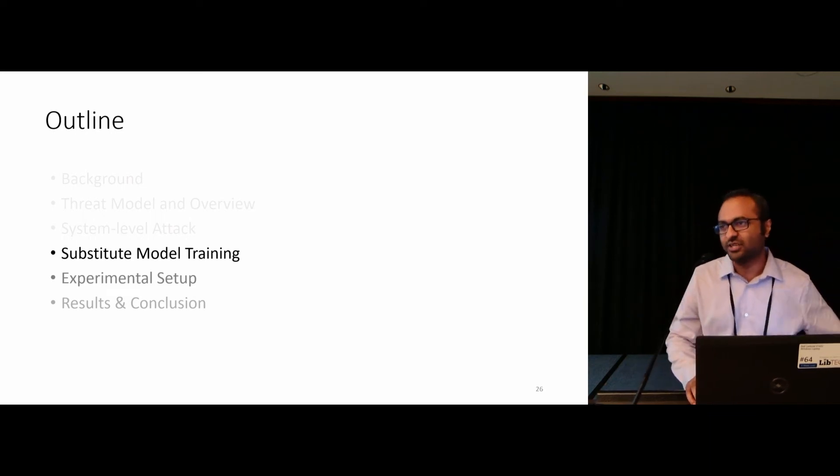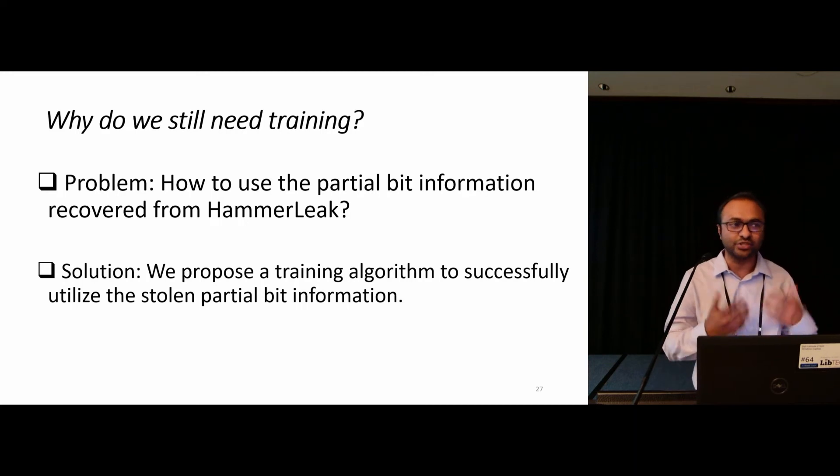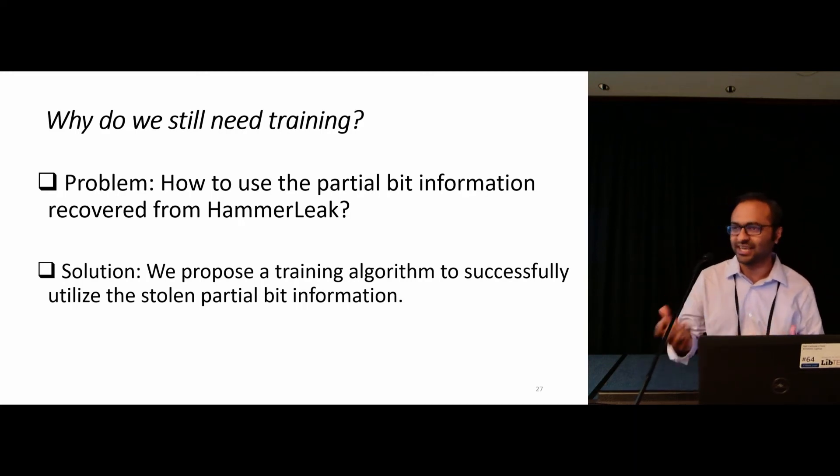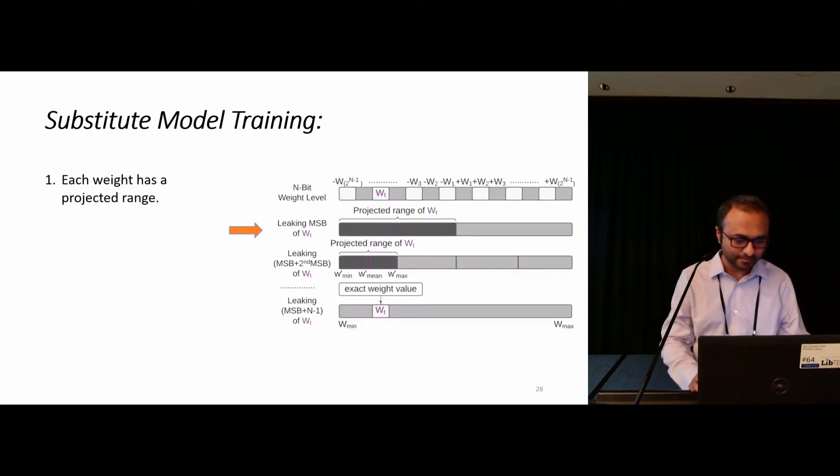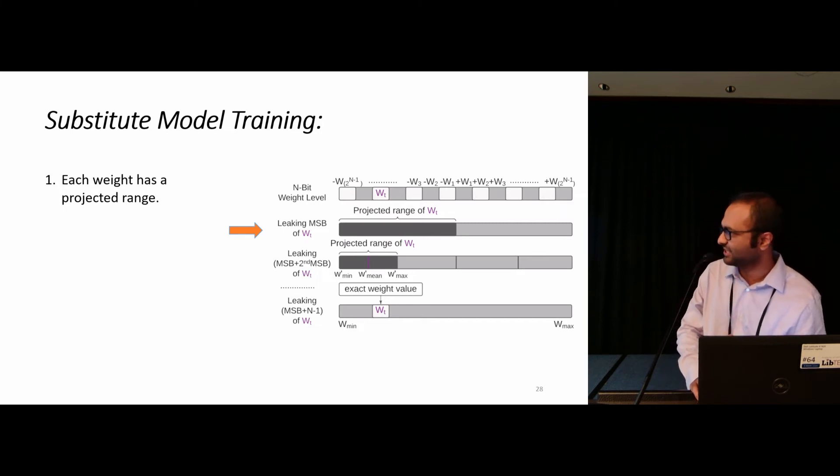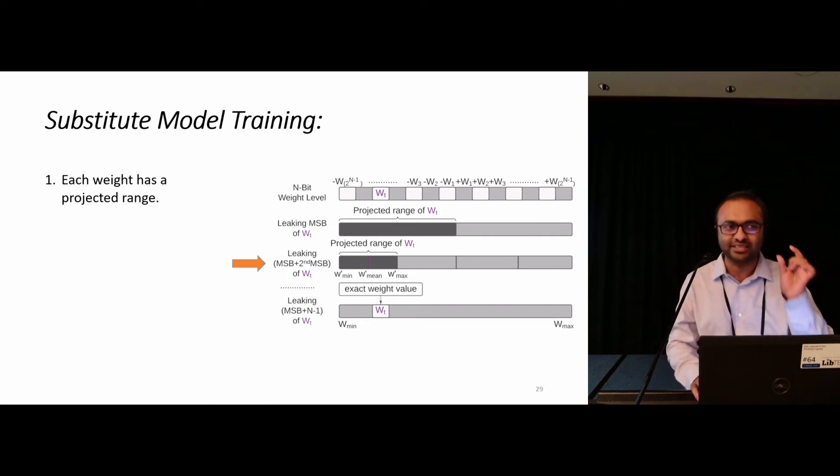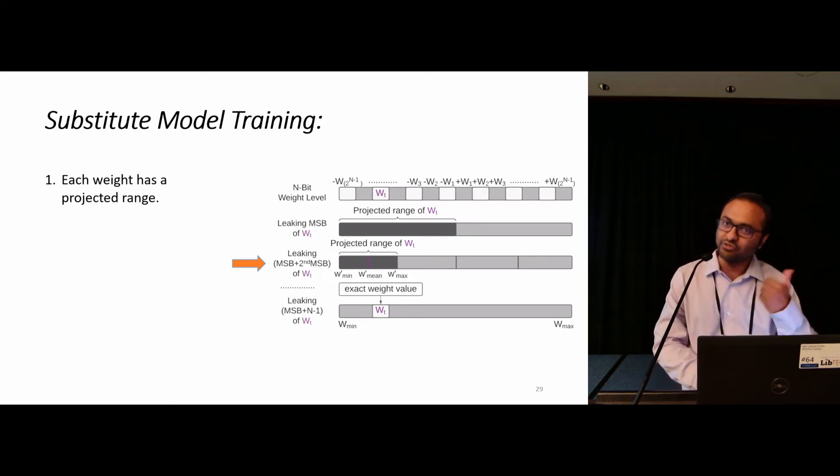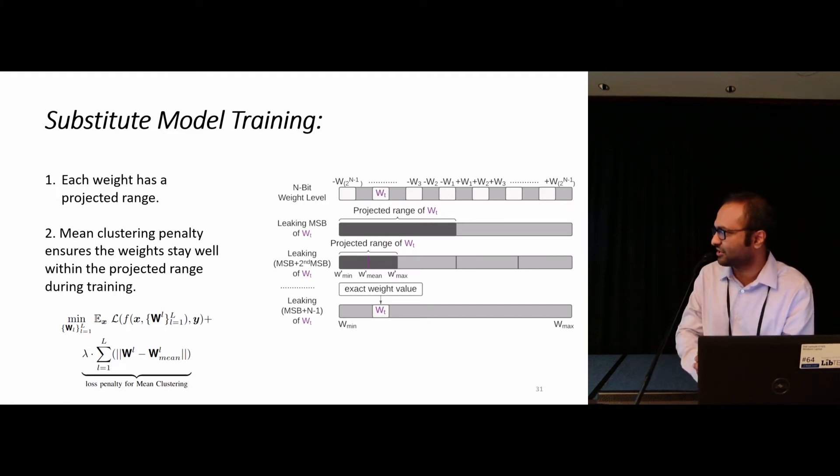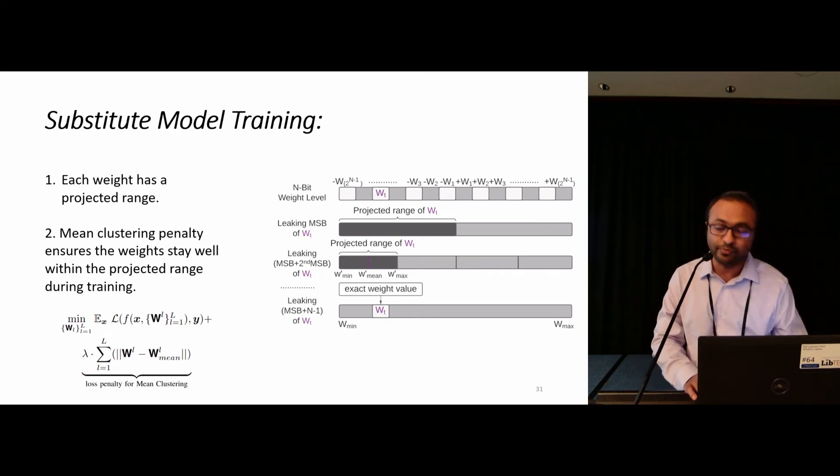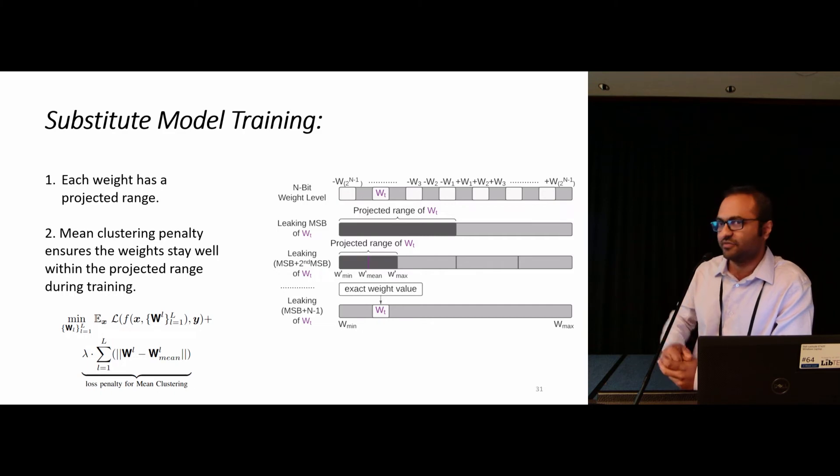Now that we have this powerful attack to leak the victim secret weight information, the next challenge we have is how to utilize this partial information. The solution that we propose is a training algorithm to utilize this partial information and train a substitute model. Basically, intuitively, you could understand if you take the weight WT and leak its most significant bit, you could project the range of the weight WT. In this way, if we leak further bits starting from the MSB, you could project the range of WT into an even narrower range. And by leaking more and more bits, we could project the range of WT into a more narrow range. In this way, after a HammerLeak attack, we will have a projected range for all the weights. Using that projected range, we could compute a projected mean for all the weights. Using that mean, we basically apply a mean clustering training penalty during the algorithm. You could see the purpose of that clustering penalty algorithm is to make sure all the weights converge near the mean of the projected range.